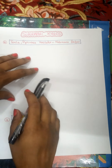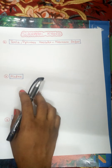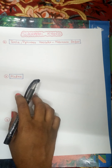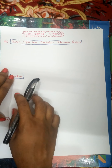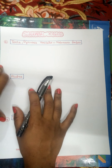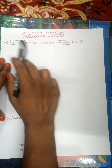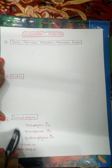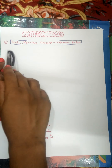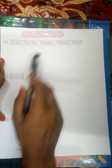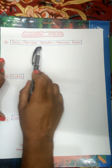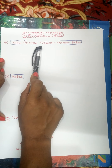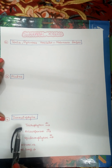Hi friends, this is Haritha. Today I'm going to talk about superficial mycosis. Superficial mycosis is mainly divided into three main types: tinea, also known as pityriasis versicolor, piedra, and dermatophytes.